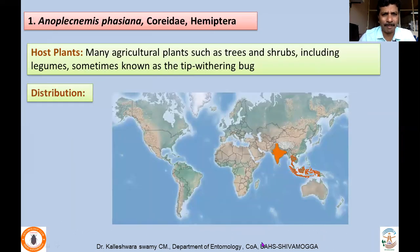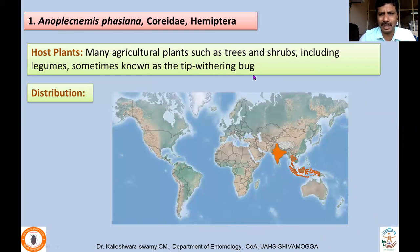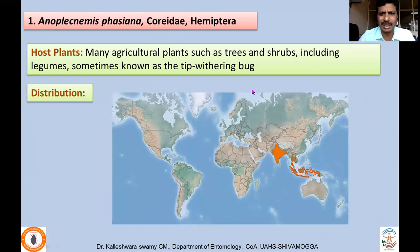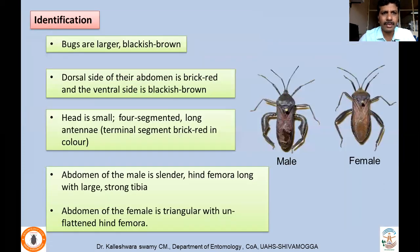Anoplecnemis faziana belongs to family Coreidae. It attacks a number of other host plants including major legumes. Sometimes it is also called the tip-withering bug, especially in the case of grapes, because it leads to withering of the apical shoots. It is mainly distributed in India and Southeast Asian countries.